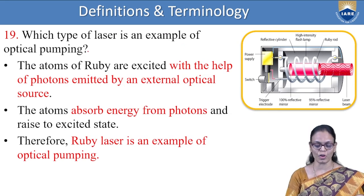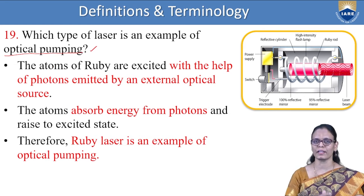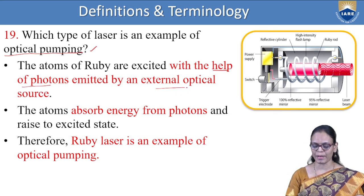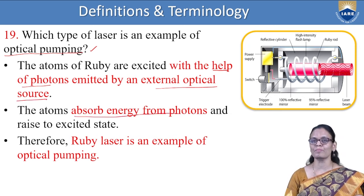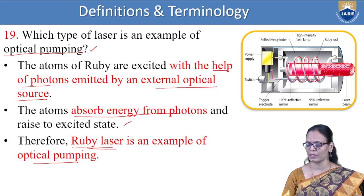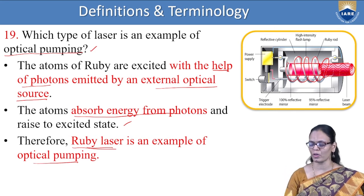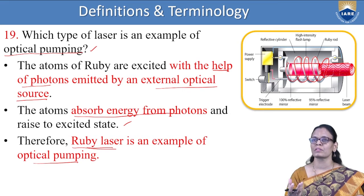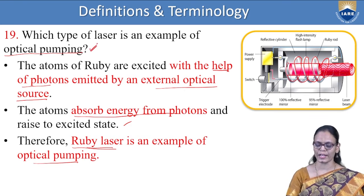Which type of laser is an example of optical pumping? In optical pumping, light is used to pump atoms from the lower level to the higher level. In ruby laser, the atoms are excited with photons emitted by an external optical source — the atoms absorb the energy and rise to the excited state. Ruby laser uses a helical flash lamp surrounding the ruby rod; when there is a flash, that energy is absorbed by the atoms and they go to the higher level. Since we are using light, we call it optical pumping.